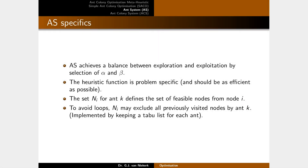The ant system achieves a balance between exploration and exploitation through the values of alpha and beta — pheromone deposits tend to give more exploration while heuristic values are more in the range of exploitation. The heuristic function is problem-specific and should be as efficient as possible. The set N_ik defines feasible nodes from node i for each ant k. To avoid loops, N_ik may exclude all previously visited nodes — when ant k visits node j from node i, it removes j from that set.